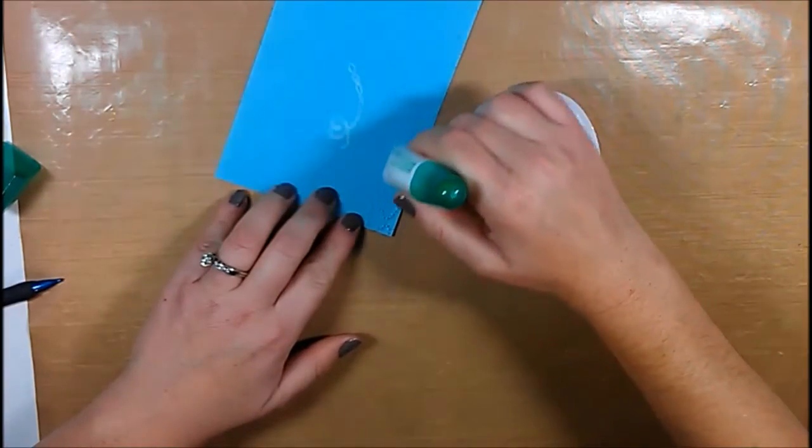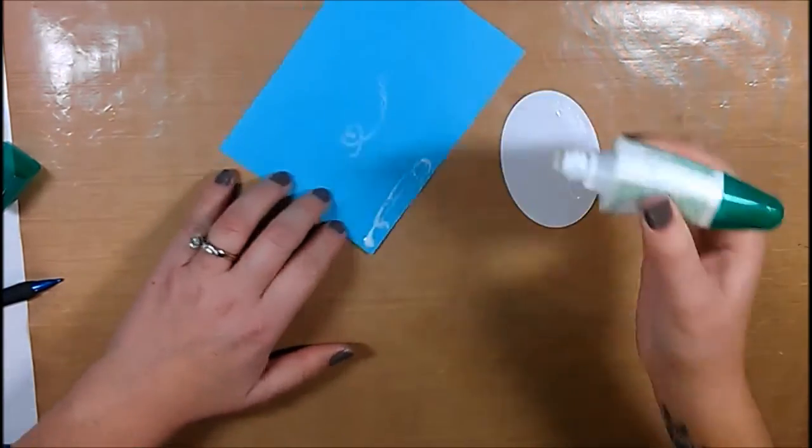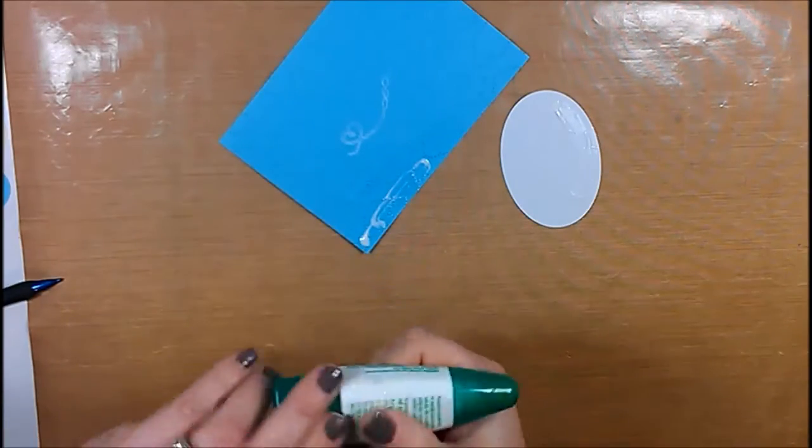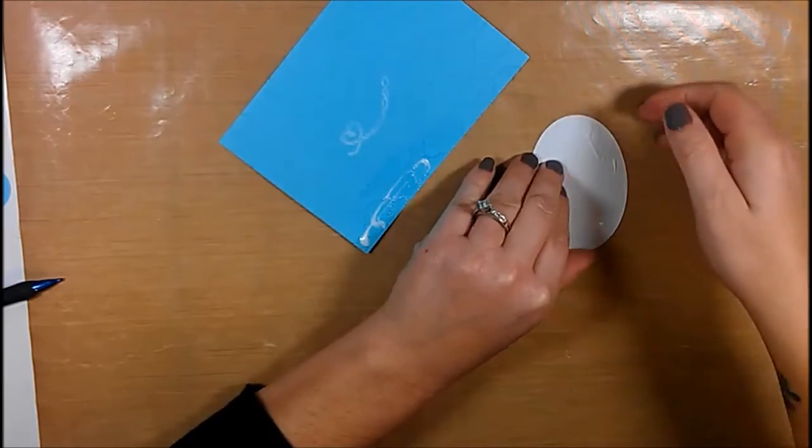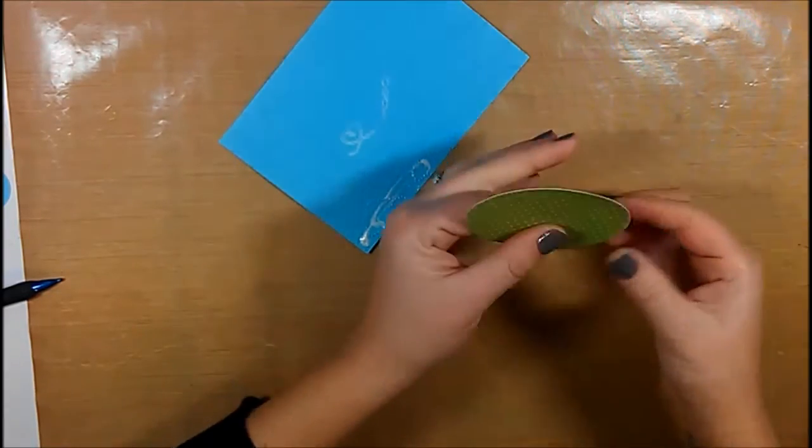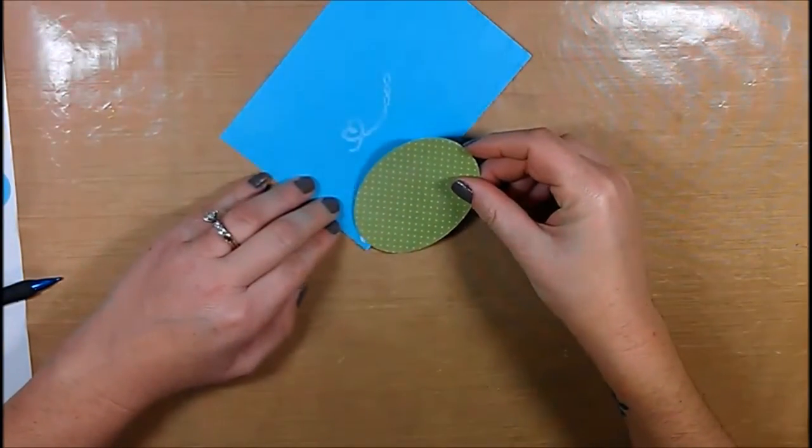I like to use the liquid glue when I'm gluing anything down to an embossed surface. I just feel like the liquid kind of gets in there a little better and gives a better hold than any other adhesives.